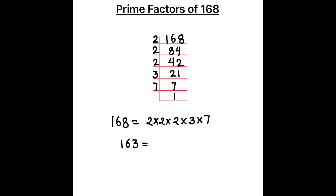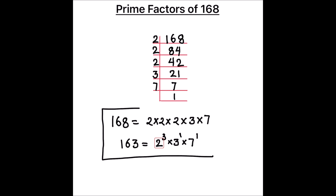We can write these factors in exponent form as 2 raised to power 3, times 3 raised to power 1, times 7 raised to power 1. So this is how we find the prime factors of any number using the prime factorization method.